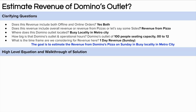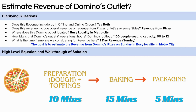Now let's start with the high-level equation and walkthrough of the solution. But before that, let me explain the concept of the bottleneck. A lot of people have commented to solve the problem from the supply side, so I have tried to do that. So let's take an order of pizza — it can be broken into these steps: taking the order, preparation time, baking time, and finally packaging.